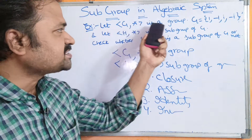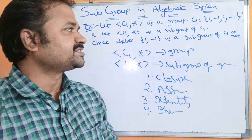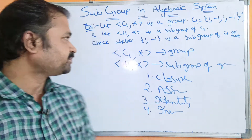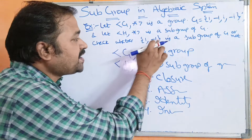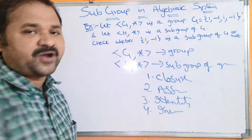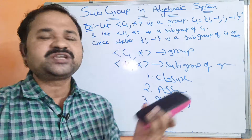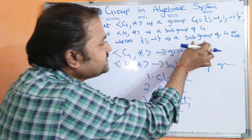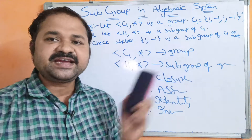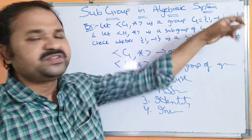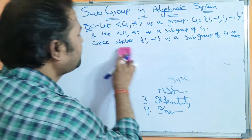Let us see this example. Let G, star be a group where G = {1, -1, i, -i} — totally four elements. Let H, star be a subgroup. We have to check whether {1, -1} is a subgroup of the group or not. So, {1, -1} is a subgroup of this group if it satisfies these four properties.